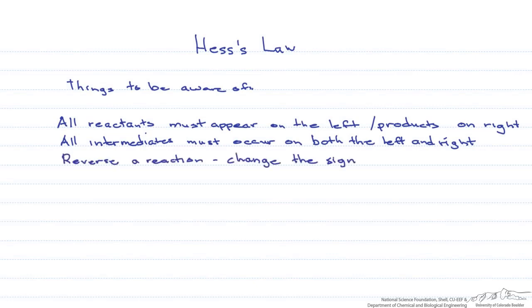If you reverse one of the reactions, you're going to have to change the sign of the enthalpy. Why? Because if the reaction in one direction loses heat, the reverse reaction must produce heat. And if we multiply or divide a reaction, we're going to have to multiply or divide the enthalpy as well.